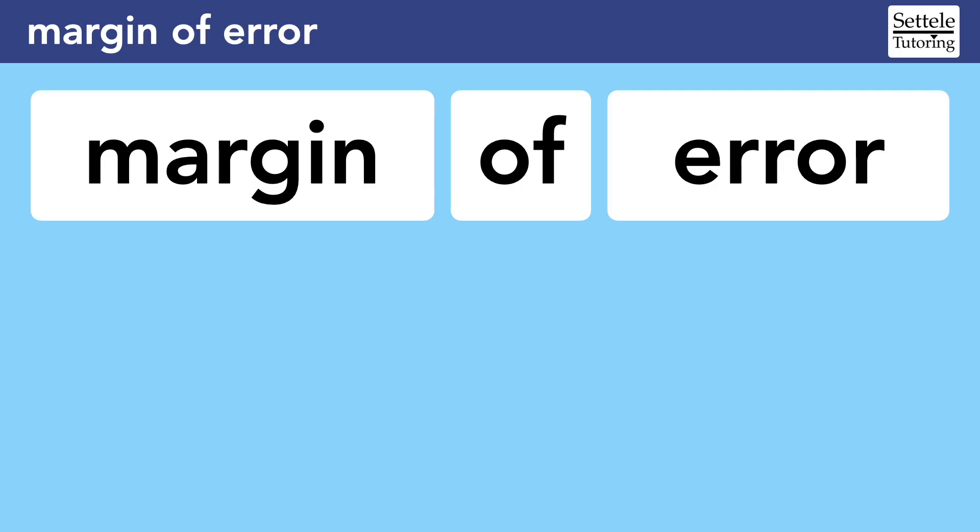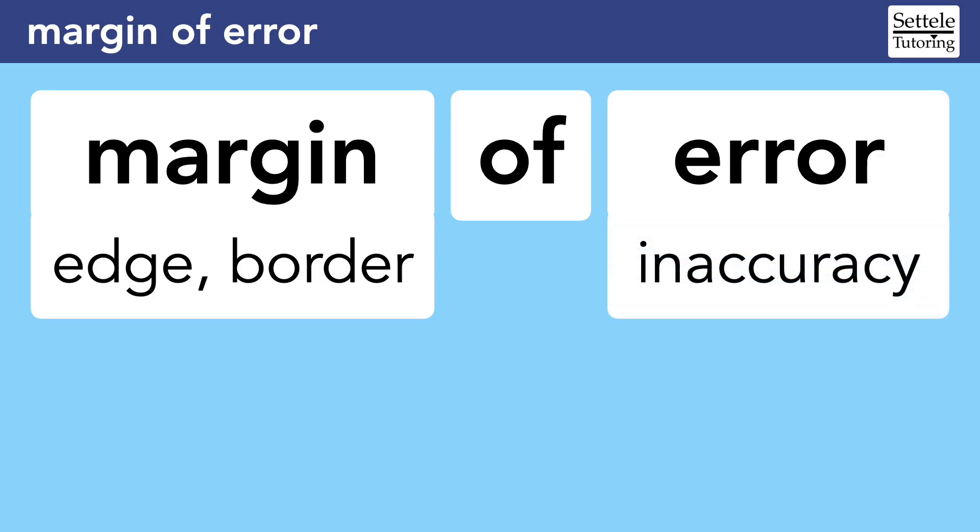First, make sure you understand what we mean by margin of error. A margin is an edge or border, like the margins in a book that surround the text. An error refers to inaccuracy, so the margin of error is giving us the edges of a range of values that capture the likely inaccuracy in a statistical survey.